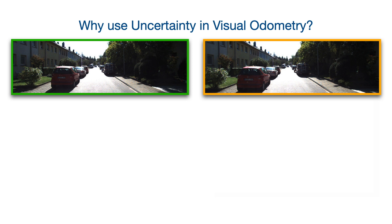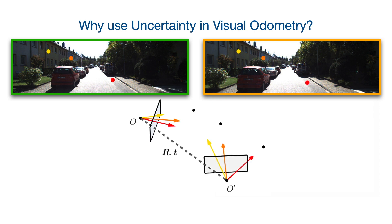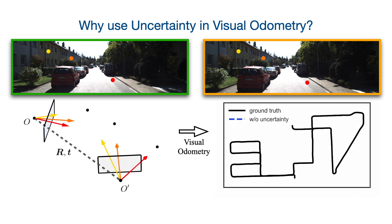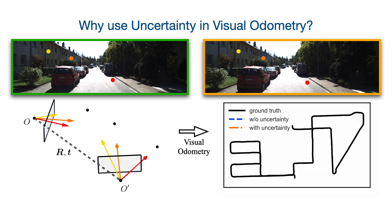Estimating the pose between two images is a long-standing problem in computer vision. Feature-based approaches use corresponding keypoints and geometric constraints such as the epipolar constraint to optimize the pose. Not all corresponding keypoints are equally well suited to accurately estimate the pose, as keypoint positions exhibit small errors. Recent literature has modeled this small error as random Gaussian noise in the image plane and derived a probabilistic optimization scheme accounting for this uncertainty, which leads to reduced drift in tasks such as visual odometry.